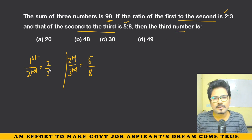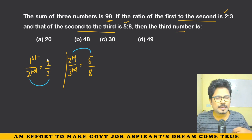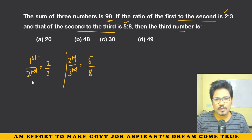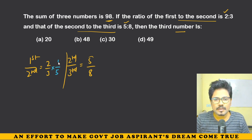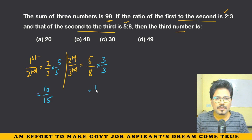To find the third number, we need to make the second number equal in both ratios. The second number is 3 in the first ratio and 5 in the second. To make them equal, we take LCM of 3 and 5 which is 15. Multiply the first ratio by 5 to get 10:15, and multiply the second ratio by 3 to get 15:24. The ratio value must not change, so we get 10:15 for first:second and 15:24 for second:third.